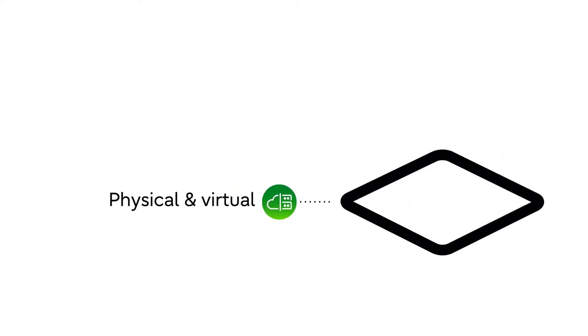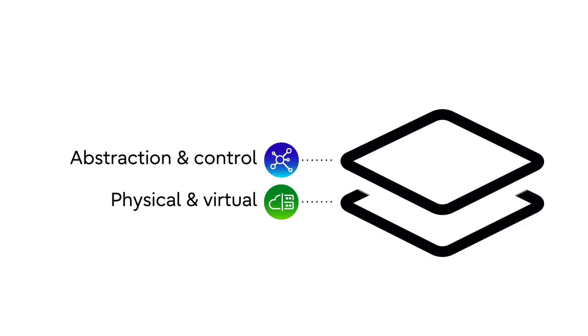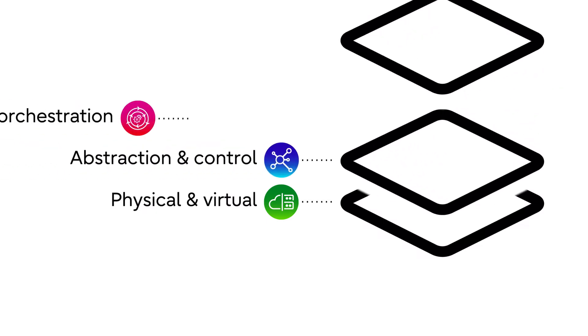Open SDN controllers leverage network elements, open APIs, and standard data models, solving one of the trickiest challenges for network operations: multi-vendor integration. This makes it easier to connect, communicate, and interoperate with both southbound network elements and northbound with OSS/BSS systems.